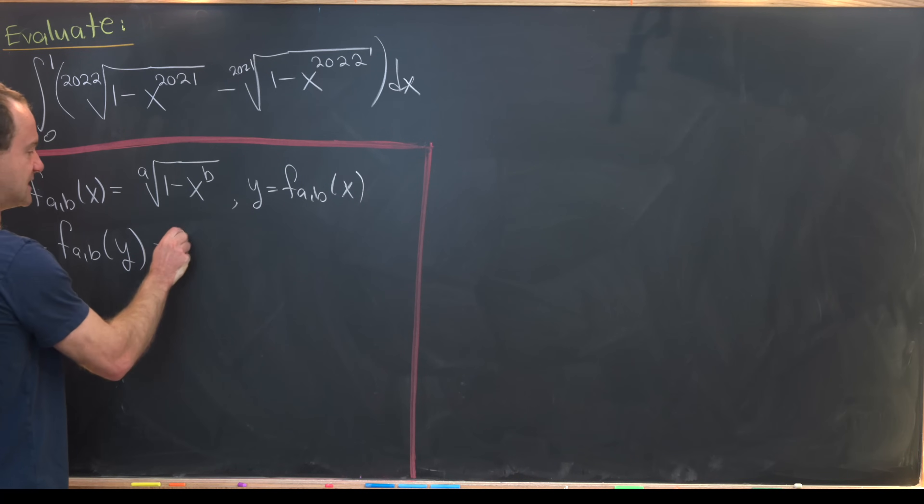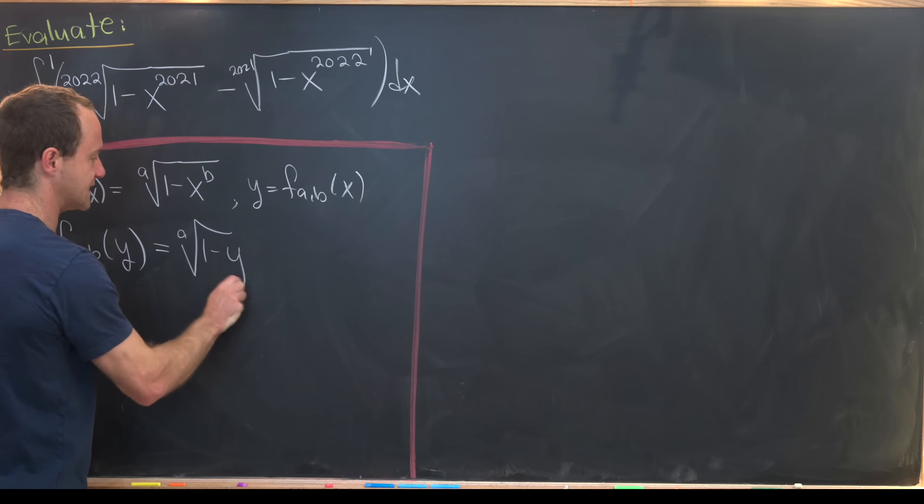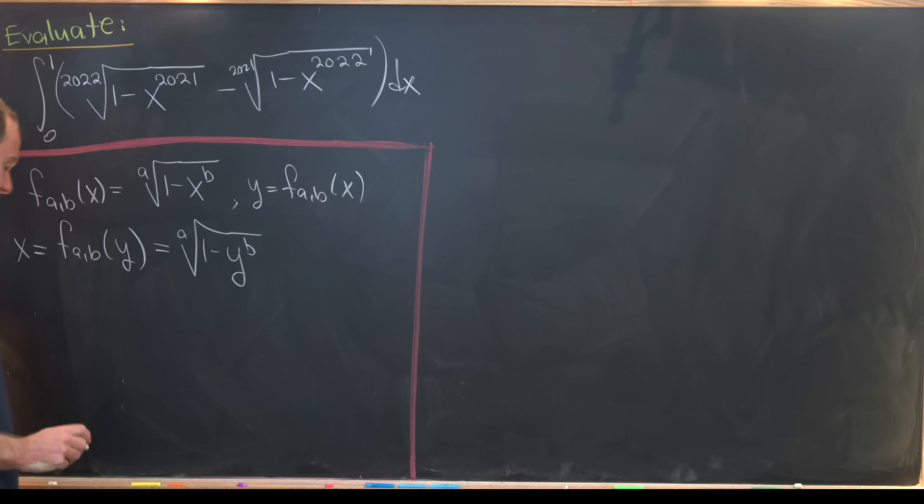So that means I've got the ath root of 1 minus y to the bth power. Now let's raise each of the sides of this equation to the ath power. That'll give us x to the a equals 1 minus y to the b.